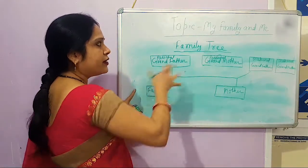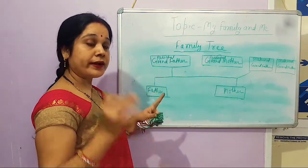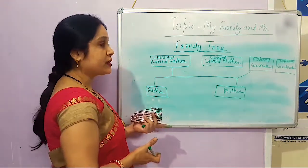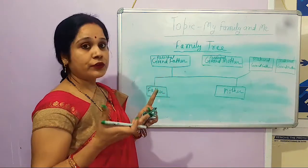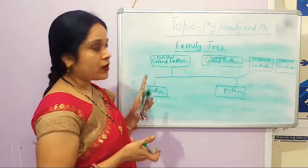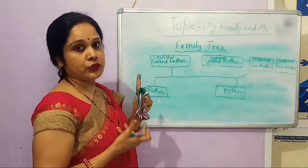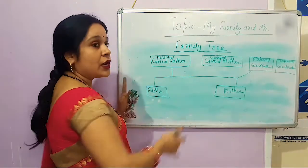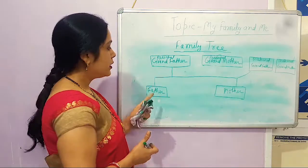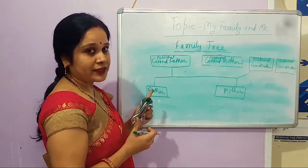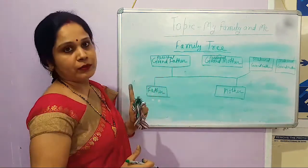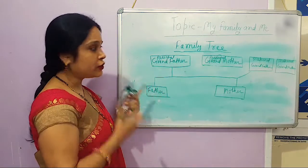You can draw various kinds of family tree depending upon the size of the family. The family tree will be different for the nuclear family, different for the bigger family, and different for the joint family. That is why the family tree may vary according to the type of family. This one shows a big family and joint family.